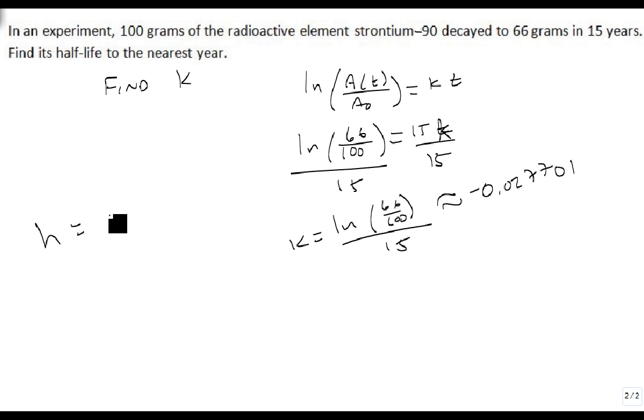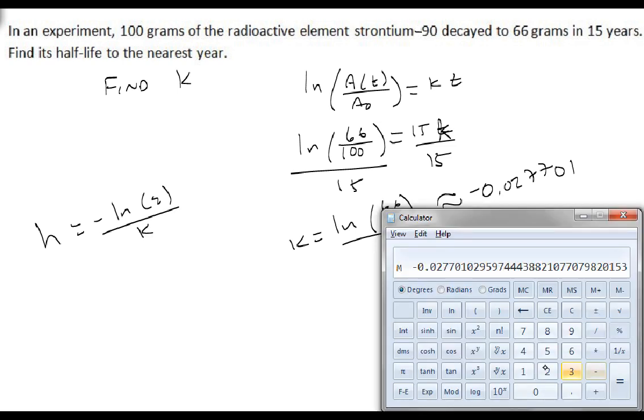To get my half-life, H is equal to minus the natural log of 2 over K. So we're going to do 2 natural log minus, and I'm going to divide that by my recall amount.